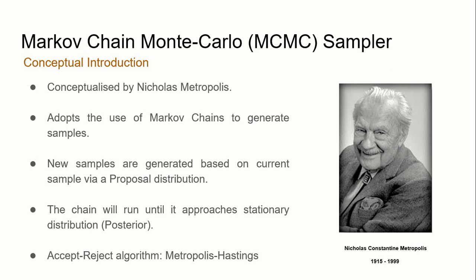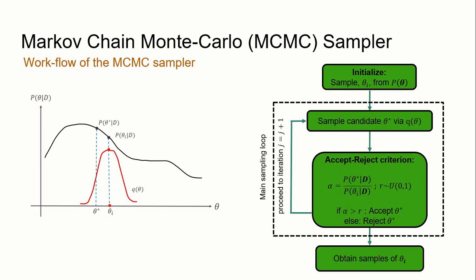The workflow of the Metropolis-Hastings algorithm is as follows. The algorithm is initialized by sampling a random sample from the prior, which serves as the starting point of the Markov chain. Candidate samples are then randomly sampled through the proposal distribution. For example, the proposal distribution is a Gaussian distribution centered above the current sample theta_i. This Gaussian distribution is used to sample a candidate sample theta_star.